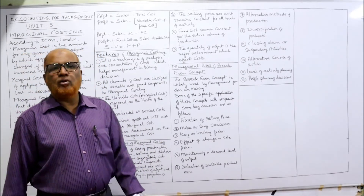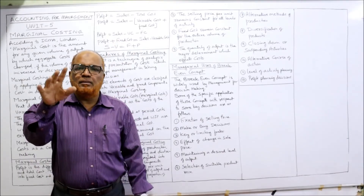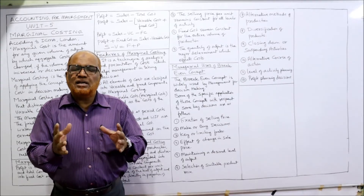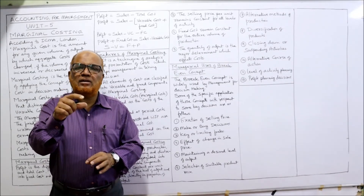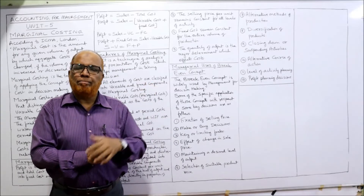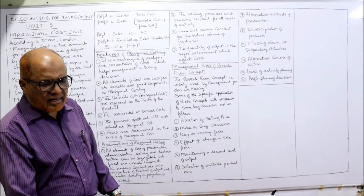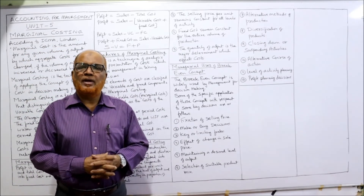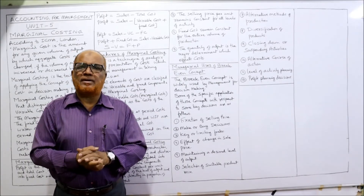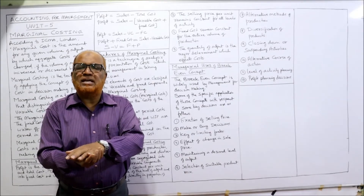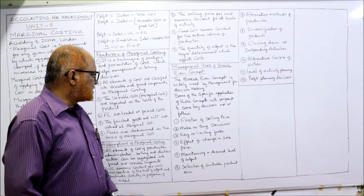The fourth application is analyzing the effect of change in selling price. Normally, if we decrease the selling price, demand increases; if we increase it, demand decreases — there is an inverse relationship between price and demand. Marginal costing technique helps management find the effect on demand due to a change in price. The fifth application is maintaining a desired level of output — deciding at what capacity level the business should operate (80%, 90%, or 100%) using break-even analysis.